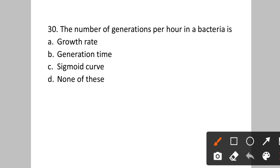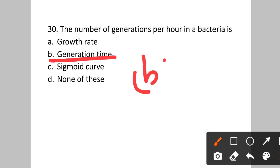Question number thirty: The number of generations per hour in bacteria is called? Option A: growth rate. B: generation time. C: sigmoid curve. D: none of these. The number of generations per hour in bacteria is called generation time. Answer will be option B.